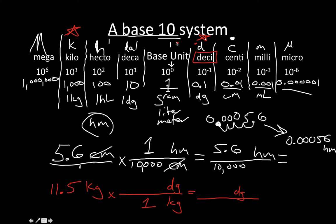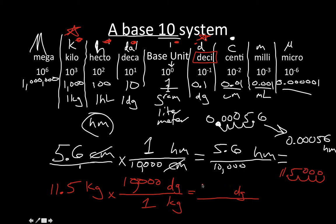Counting from kilo down to deci on the scale, that's four spots, so four zeros — meaning there are 10,000 decigrams in one kilogram. Since we're multiplying, we move the decimal in 11.5 four places to the right, filling in with zeros: 11, 5, and three zeros. So 115,000 decigrams equals 11.5 kilograms.